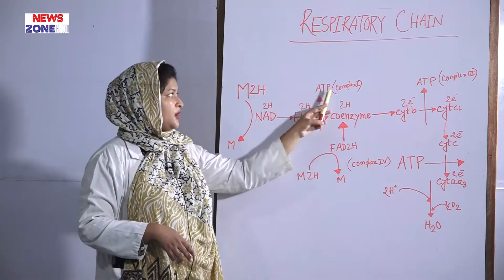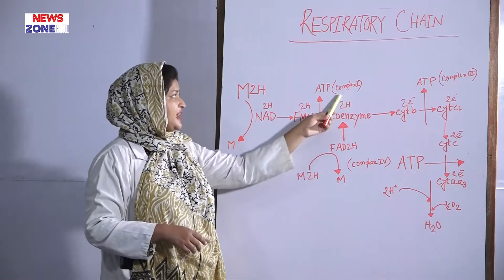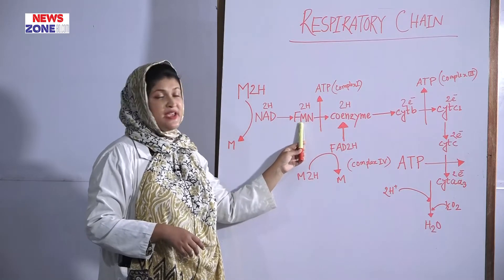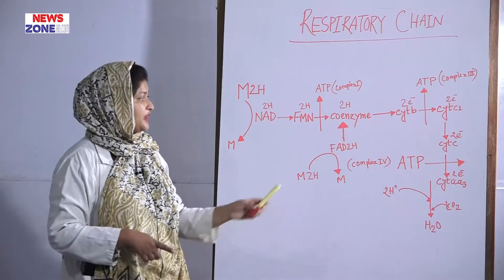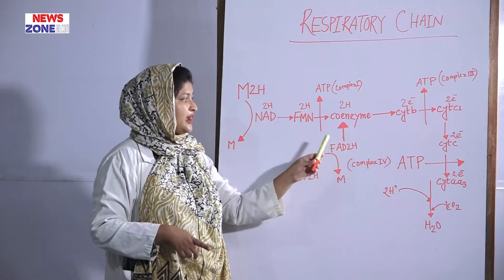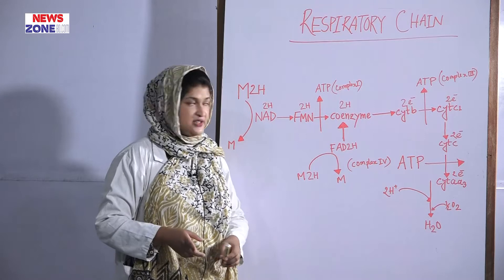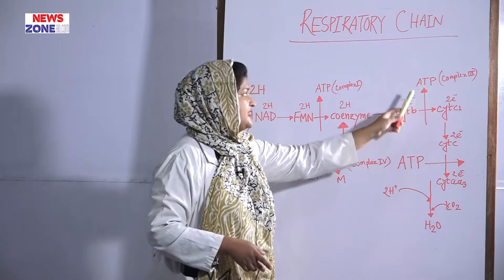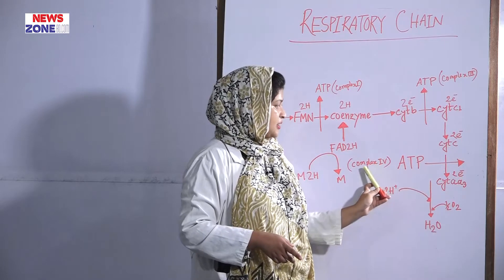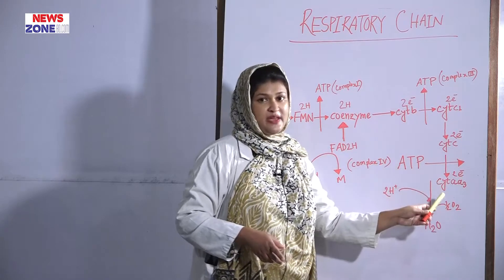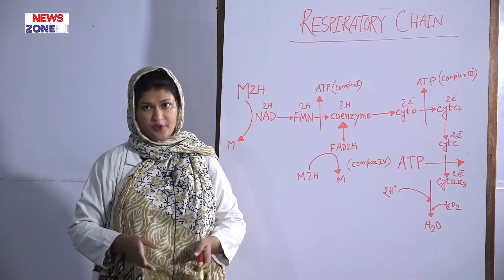The non-diffusible components are known as complex particles. In complex one, there is FMN and its enzyme NADH dehydrogenase. In complex two, there is FAD and its enzyme succinate dehydrogenase. In complex three, there is cytochrome B and cytochrome C1. In complex four, there is cytochrome AA3, also known as cytochrome oxidase.